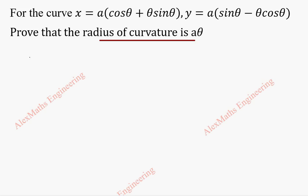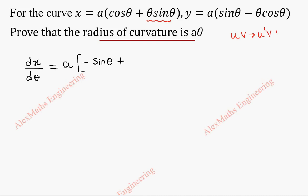As a first part, we have to find dx by d theta. Here, a is constant. Cos theta differentiation is minus sin theta, plus we have a product of two terms, so we follow the product rule: uv method, which is u dash v plus u v dash. So theta differentiation is 1 and v we write as it is, plus u as it is and sin theta differentiation is cos theta. Finally, minus sin theta plus sin theta cancel, and we get a theta cos theta.